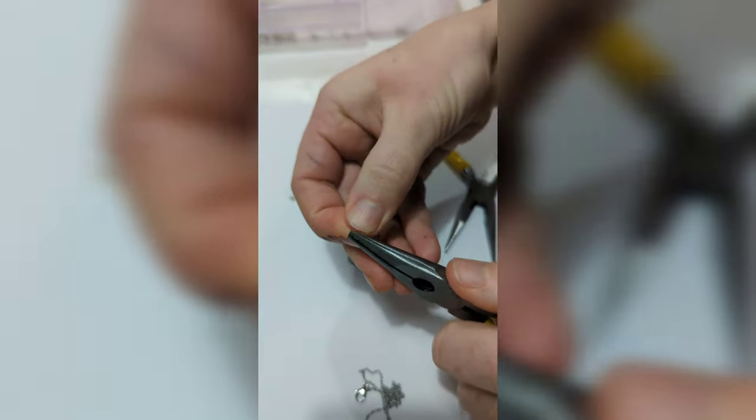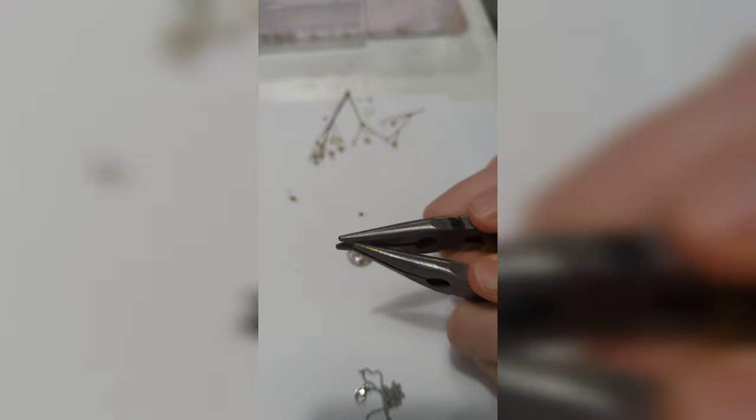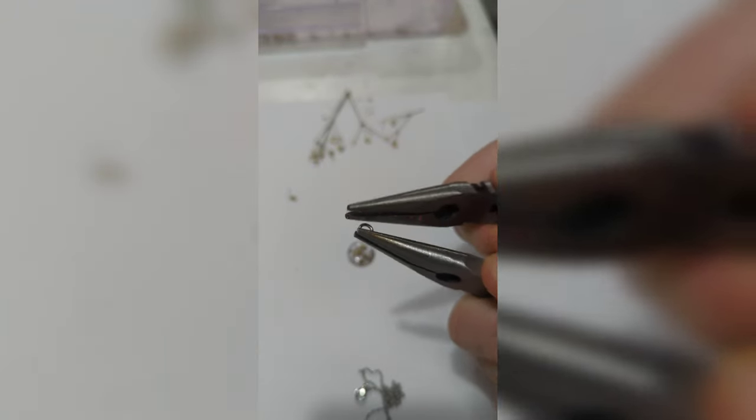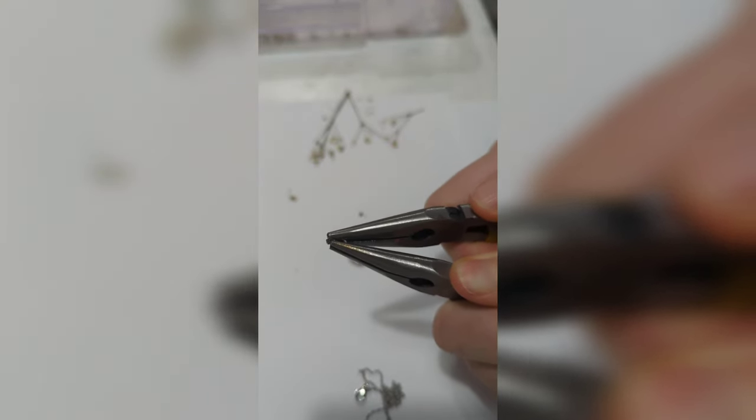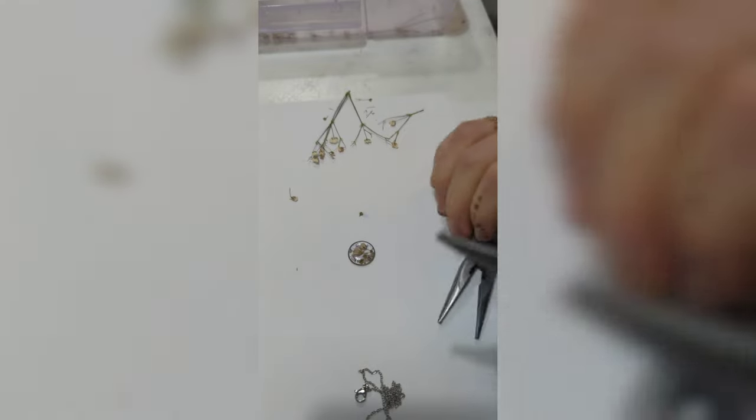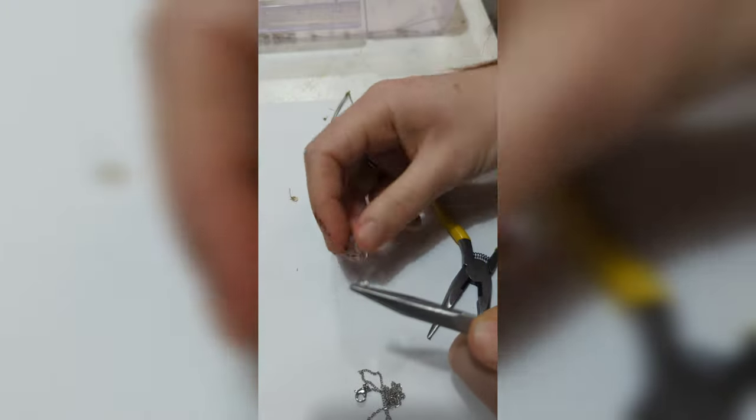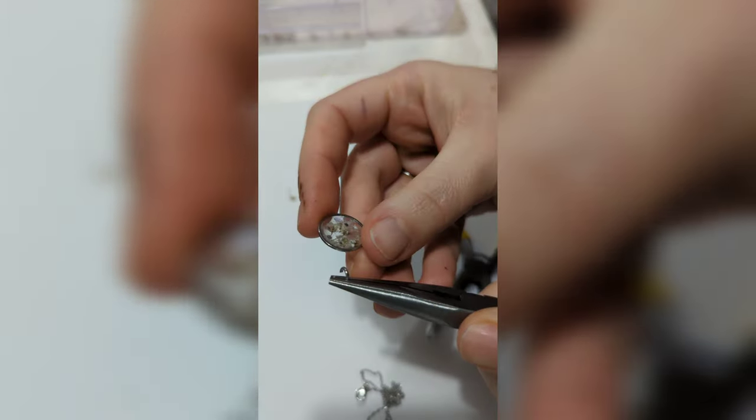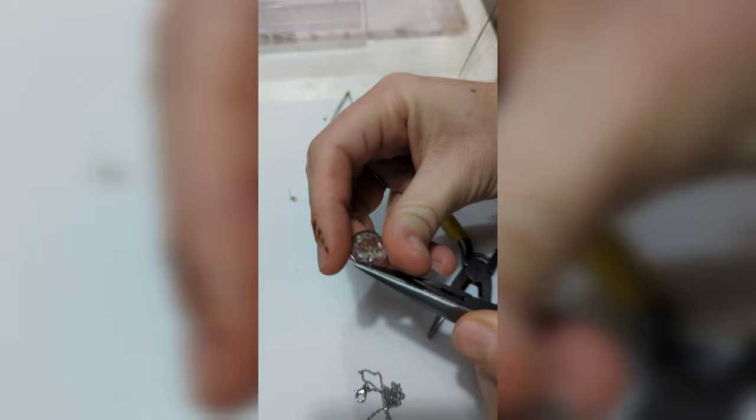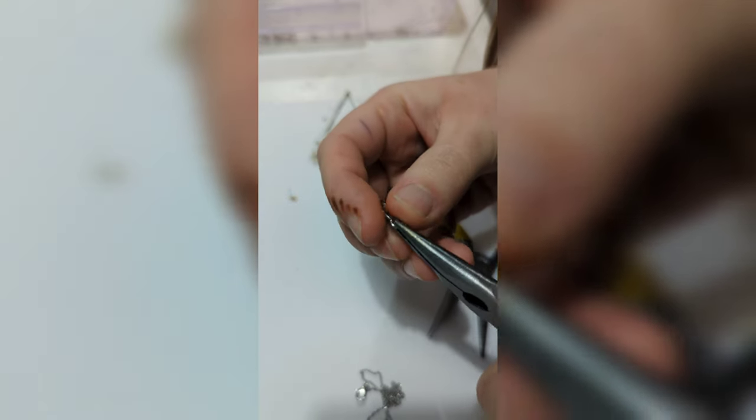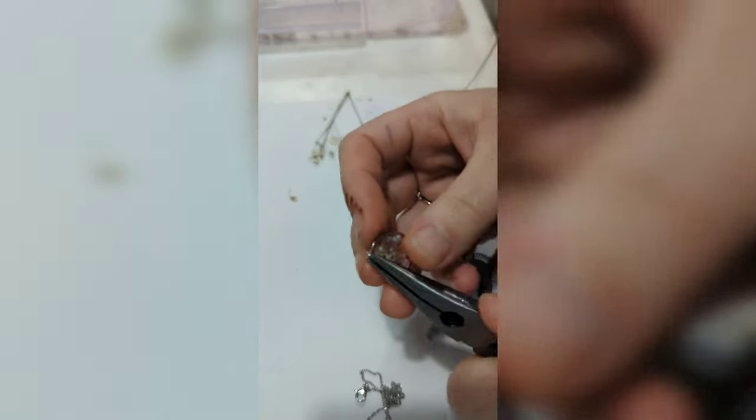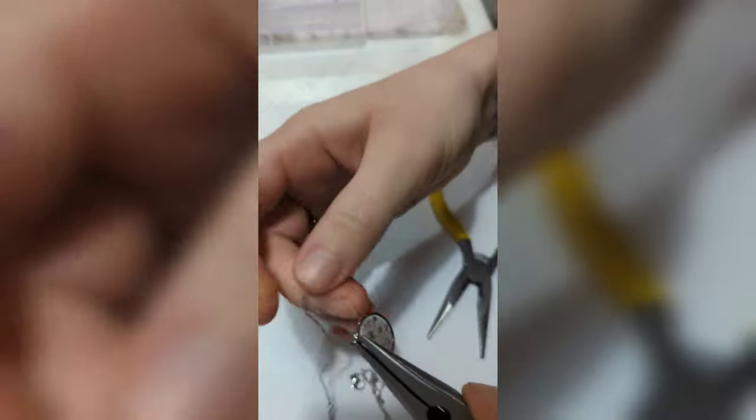I use my pliers to open up the jump ring so I can get the pendant on there. Not wide enough. A little wider. Then I'll just get that into the hole that I drilled, poking it in there, and adding the chain. Just closing it up.